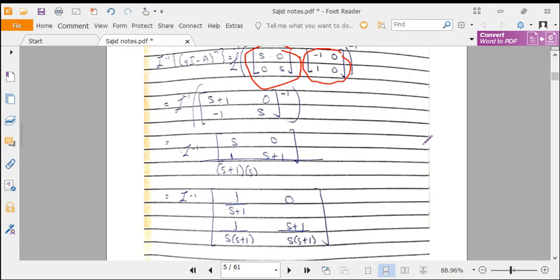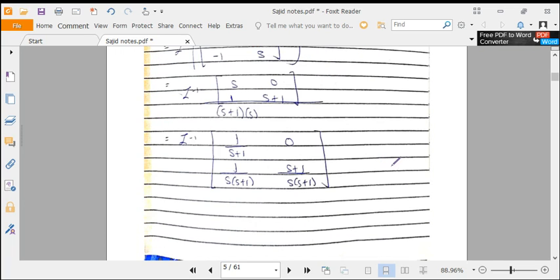We are taking its inverse. The inverse of a 2 by 2 matrix is adjoint of matrix divided by determinant of matrix. So the determinant is s times (s+1), while the adjoint is [s 0; 1 s+1]. Here we have divided this 2 by 2 matrix by (s+1) times s.